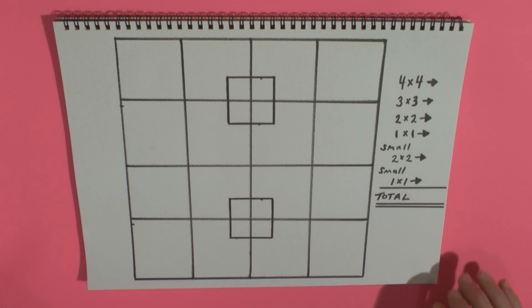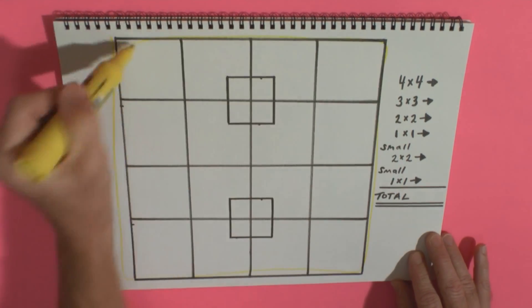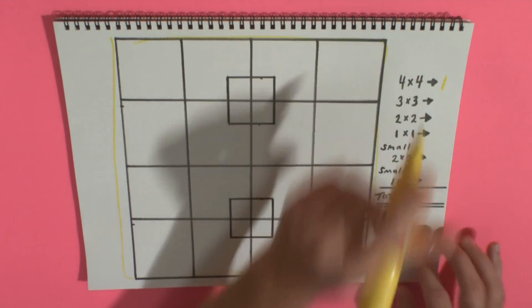And let's go through them all real quickly here. The first one, the four by four, is the biggie right there. So we've got one huge one.